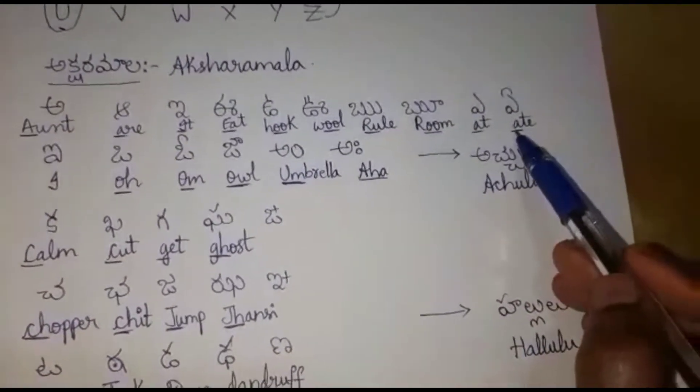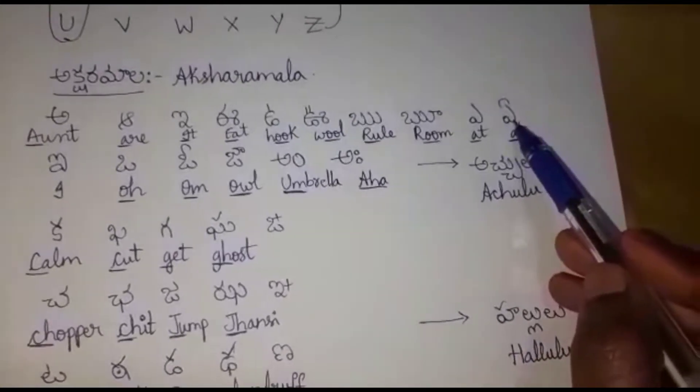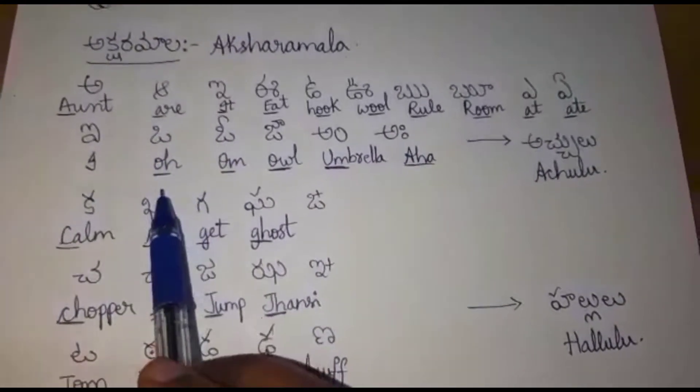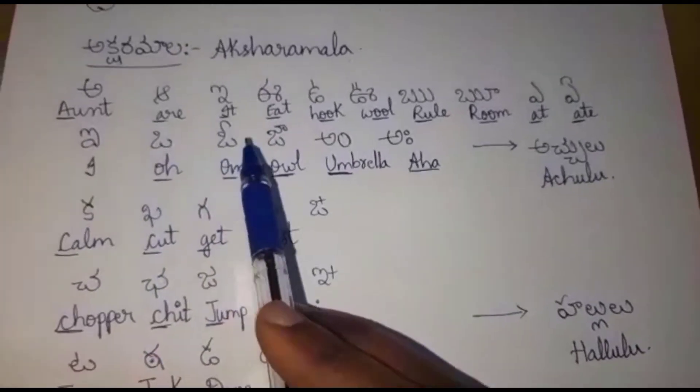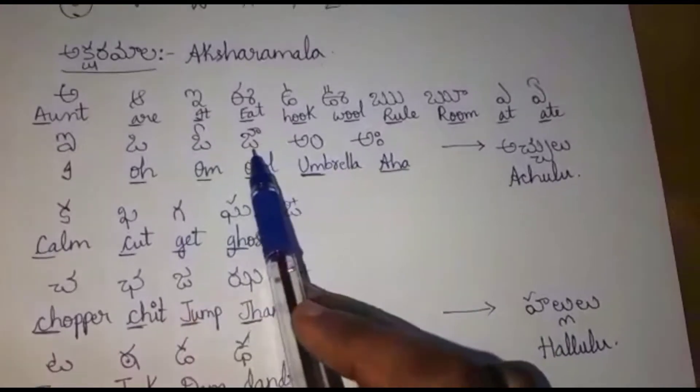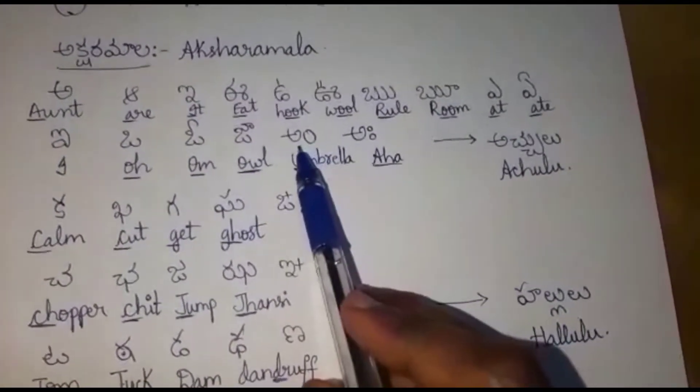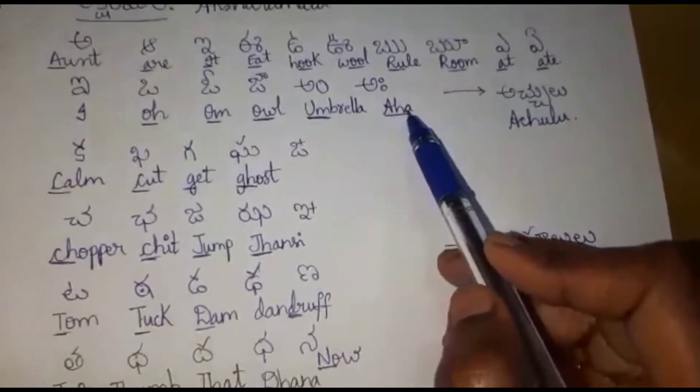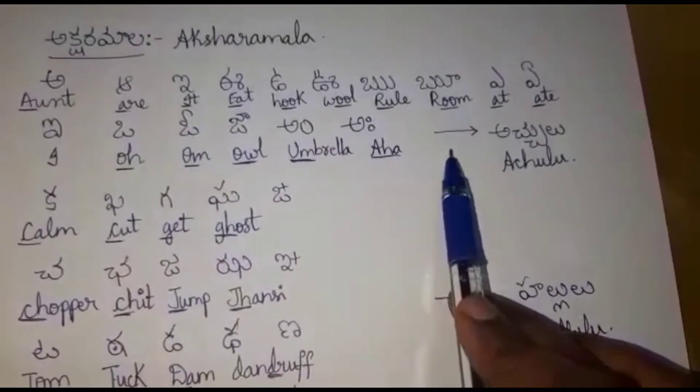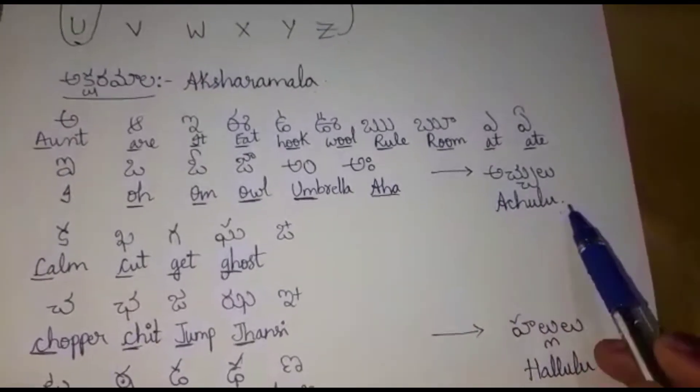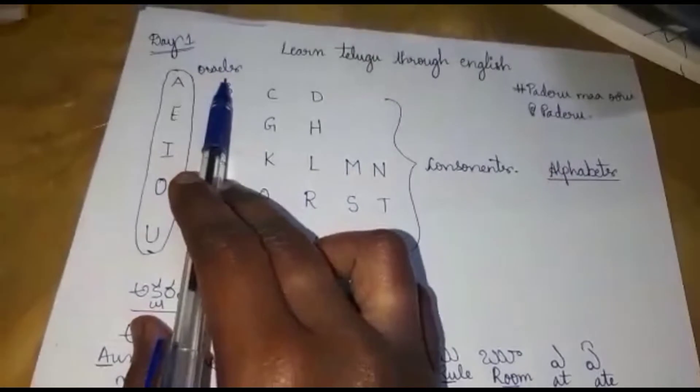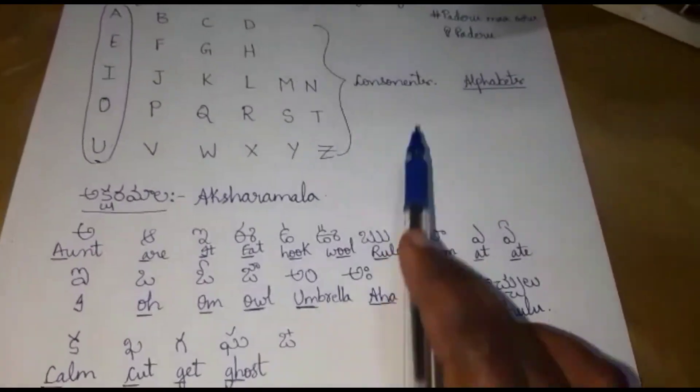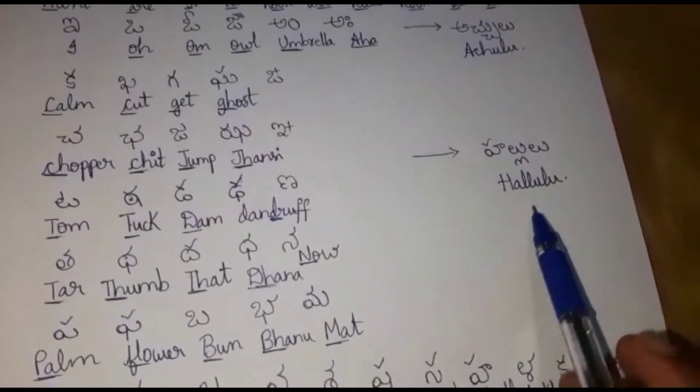I have underlined the letter which produces the sound of this letter. These letters are called as Achulu in Telugu. These are similar to vowels in English. So, vowels are similar to Achulu. Now, coming to consonants, the remaining letters in Telugu are called as Hallulu.